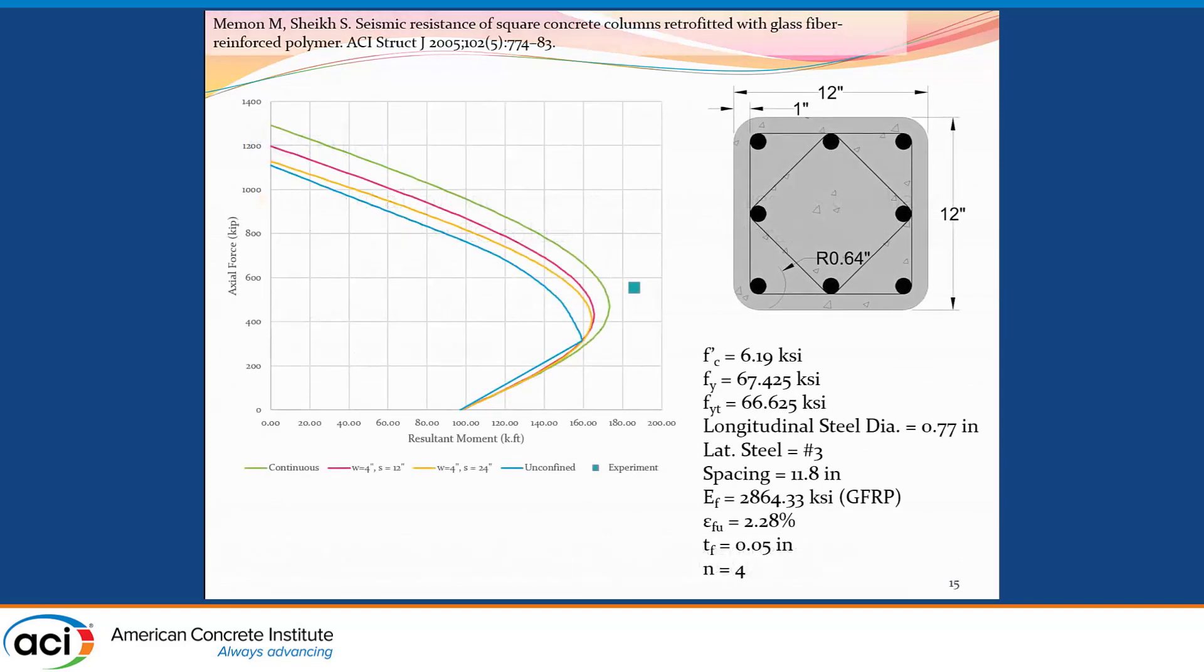First specimen is by Mamoun and Sheikh. This one is a square section that had four layers of FRP. We can see here the interaction diagram showing the axial force versus the resulting moment. We have a presentation of the cross section here with the reinforcement. We also have all the parameters that were used in the testing. The point here shows the experimental result. The green line is the confined behavior with the continuous FRP wraps. As we can see, the experimental point is outside of the curve, which shows that, and very close to it, which shows that our prediction for the fully confined behavior is close and conservative in this case.